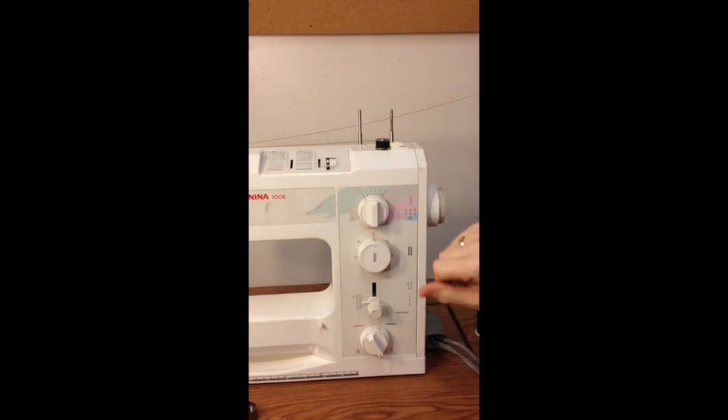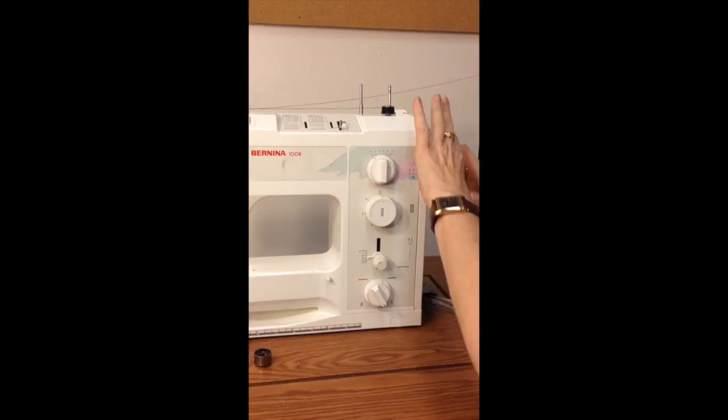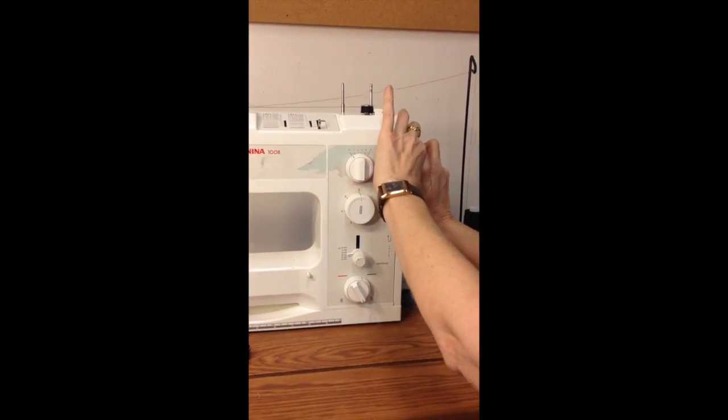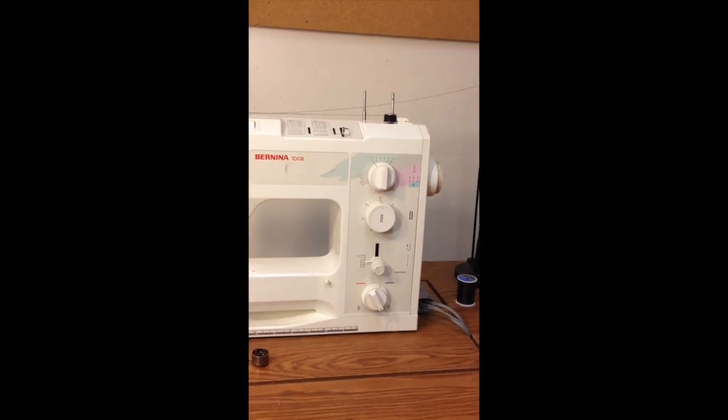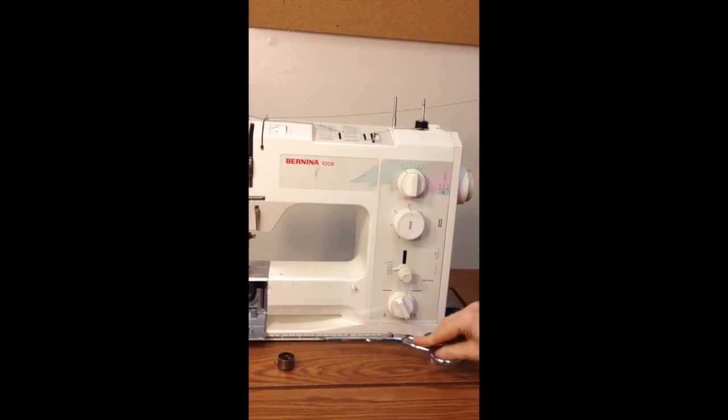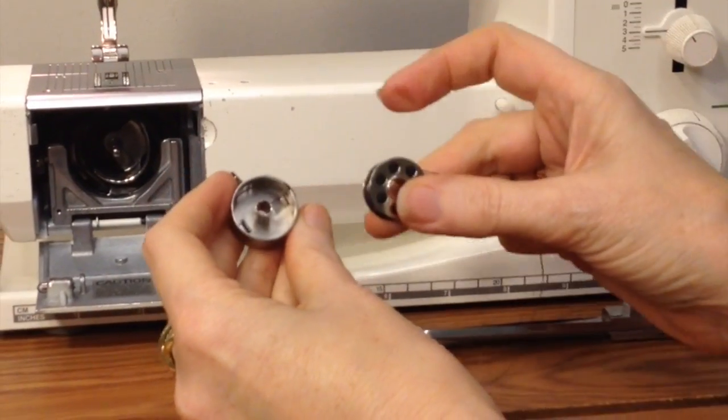Take your foot off the gas pedal. Remember to engage the flywheel. Without this being engaged, the needle and the thread uptake lever won't work. Cut your thread. Pop your bobbin off.